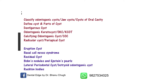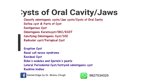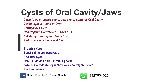Now coming to cysts of the oral cavity or jaws. The most commonly asked questions are: first, to classify odontogenic cysts — sometimes specifically odontogenic cysts, or in general jaw cysts or cysts of the oral cavity, so you should know it completely. You can also be asked to define a cyst. The cysts asked in detail most commonly are dentigerous cyst, odontogenic keratocyst or OKC or KCOT, calcifying odontogenic cyst or COC, and radicular cyst or periapical cyst.